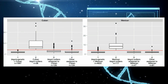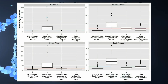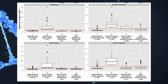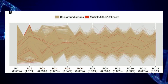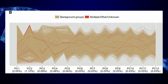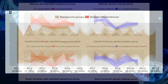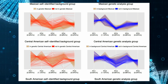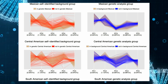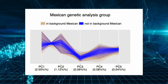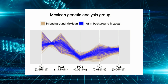The researchers created genetic analysis groups based on both genetic data and the background groups people identified with. These groups were designed to be more genetically similar within each group and to include everyone in the study, even those who didn't identify with a specific background. By doing this, they made sure that the groups were more accurate for genetic studies and avoided problems that arise when someone's genetic background doesn't match their self-identified group. The analysis showed that people who identified as 'other' or with multiple backgrounds fit into the overall genetic patterns, and that people who identify as Mexican but don't fit into the Mexican genetic analysis group are often outliers in genetic comparisons.